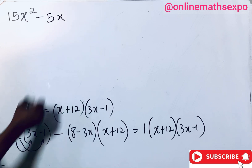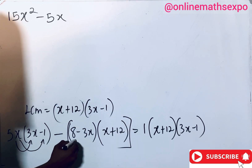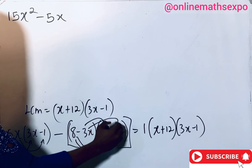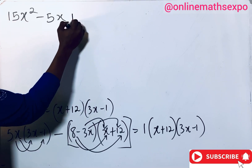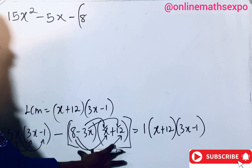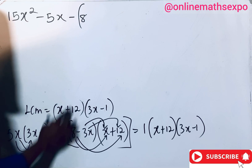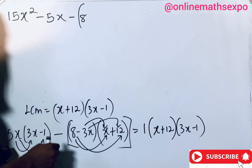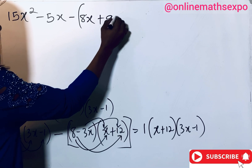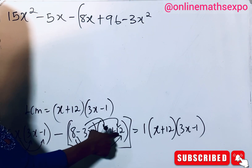Now expanding (8 − 3x)(x + 12): 8 × x = 8x, and 8 × 12 = 96. Then −3x × x = −3x², and −3x × 12 = −36x. Remember there is a subtraction sign before this bracket, so we must put this expansion in brackets so that the sign affects everything inside.